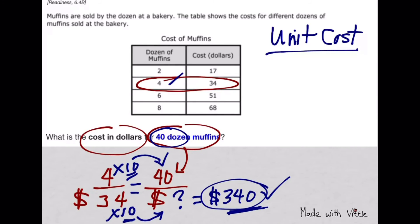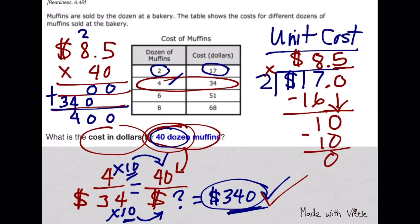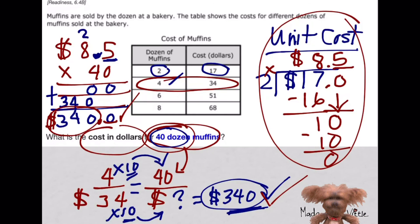You can also find the unit cost in this situation. By dividing that $17 by 2, you'll get the cost of 1 dozen. This is the cost of 1 dozen of muffins, $8.50. Then you can multiply that by 40 dozen and you're still going to get $340. Unit cost will help you find the cost of other numbers of dozens of muffins by multiplying that by whatever number of dozens they have on the question.